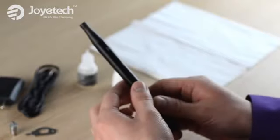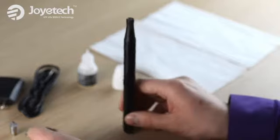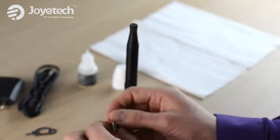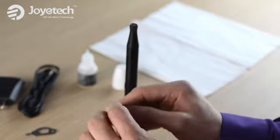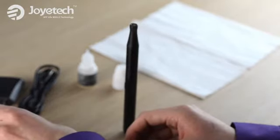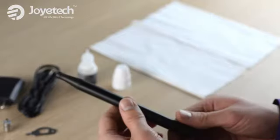Secondly, the voltage setting on the eCom is very important. Since the C2 atomizer head is set at 2.4 ohms, the voltage setting should be set at 3.8 or higher for a good vape. The eCom is the only variable voltage device on the market that will not experience a dry burn at 4.8 volts.